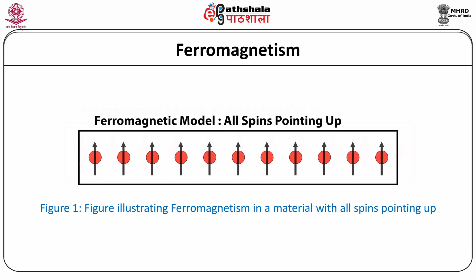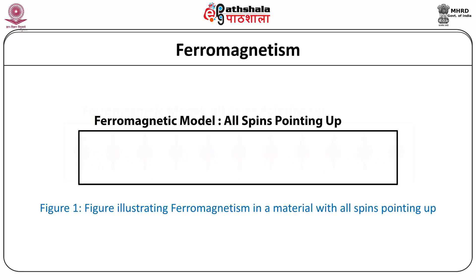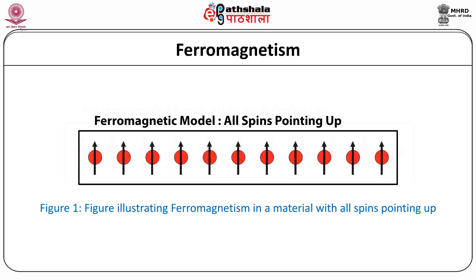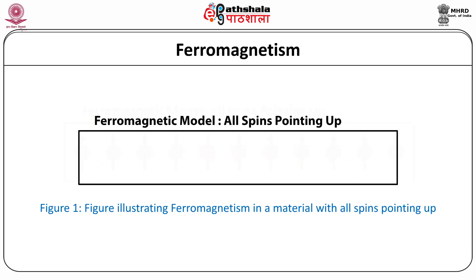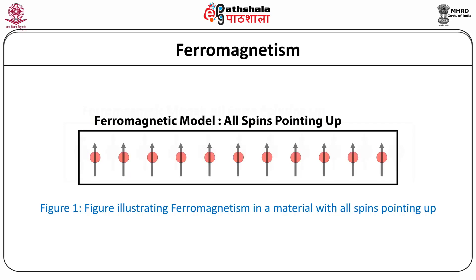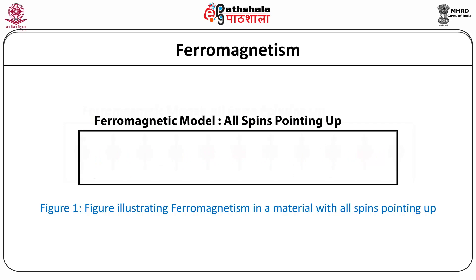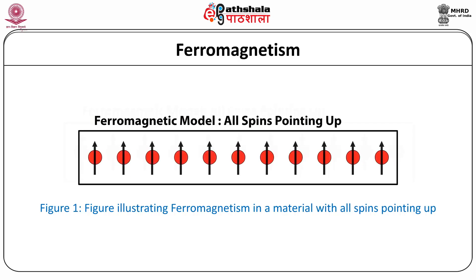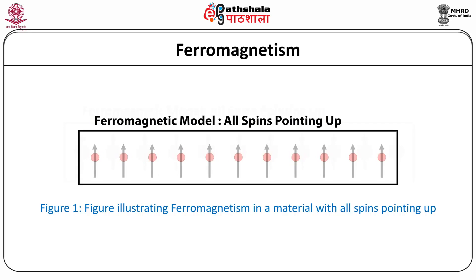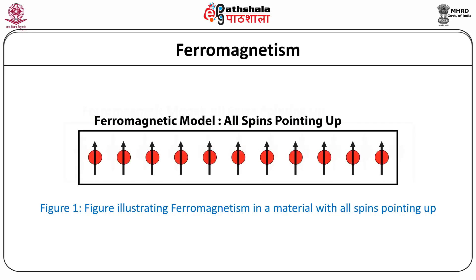What is ferromagnetism? In a ferromagnetic model, a material which exhibits ferromagnetism has all the spins pointing in the same direction — in this case they are all pointing up. So in a ferromagnetic model, all spins point up. That is the basic idea about ferromagnetism.